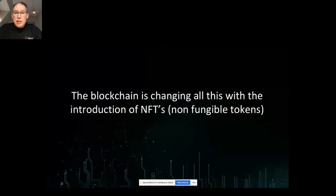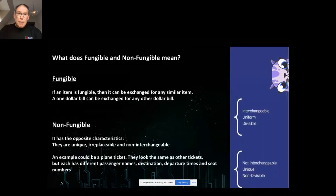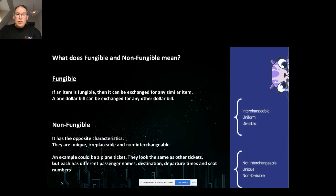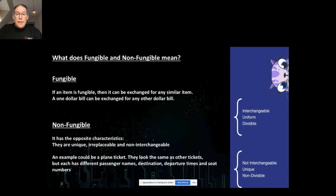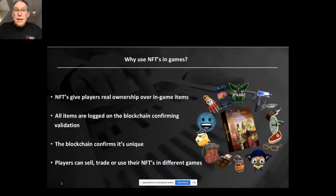The blockchain is changing all this because of the introduction of NFTs — non-fungible tokens. Going back to basics: what does fungible and non-fungible mean? Fungible is basically an item that can be exchanged for anything similar — a one dollar bill can be exchanged for another dollar bill. Non-fungible has the opposite characteristics: unique, irreplaceable, and non-interchangeable. An example is a plane ticket — it looks the same as other tickets, but each has a different passenger name, destination, departure time and seat number. I cannot swap my plane ticket for yours — that is non-fungible, and that is what an NFT is.